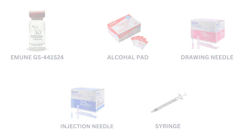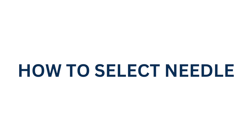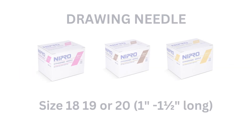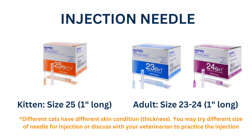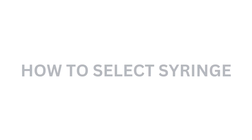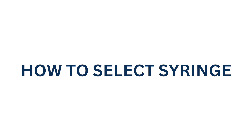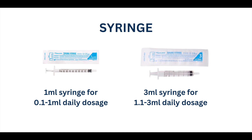How to select needle: drawing needle size 18, 19, or 20; injection needle — kitten size 25, adult size 23 to 24. Different cats have different skin conditions, so you may try different sizes of needle for injections, or discuss with your veterinarian to find the best practice.